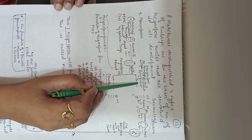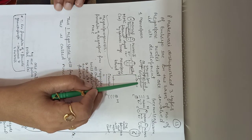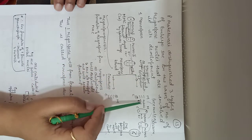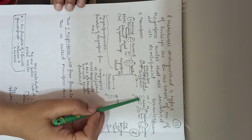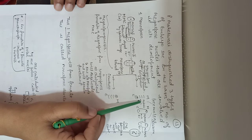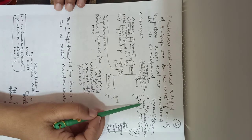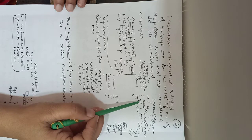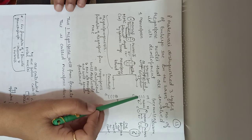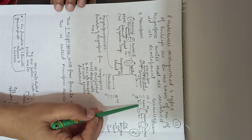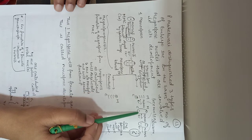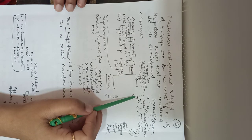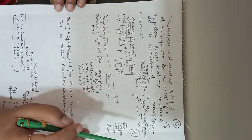This remaining megaspore will undergo mitosis, but this mitosis will be different from normal mitosis — this is free nuclear division. The remaining megaspore will undergo free nuclear division, meaning the nucleus will divide but the cytoplasm will not divide.